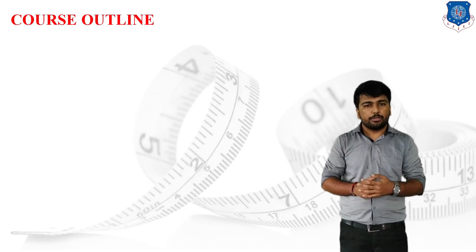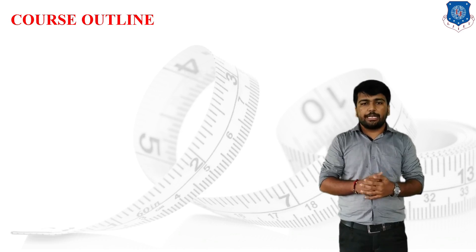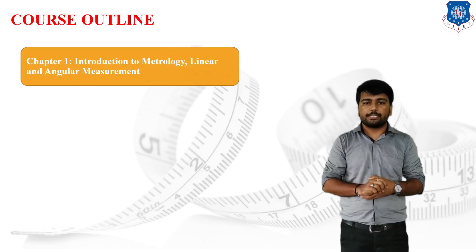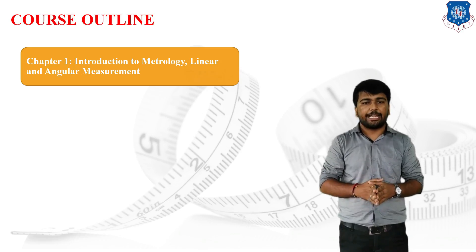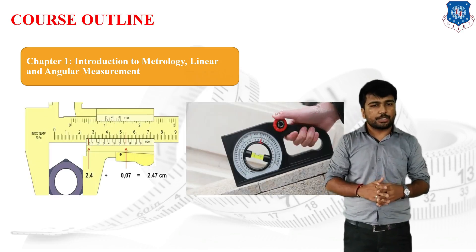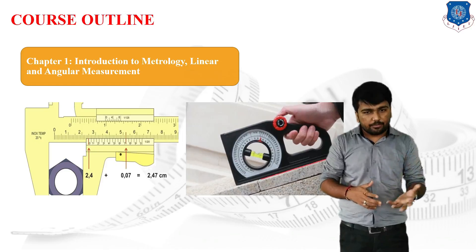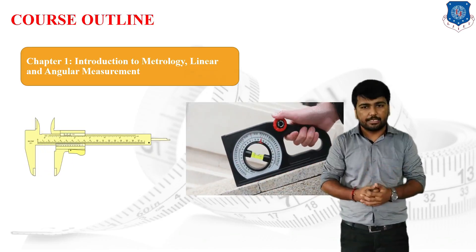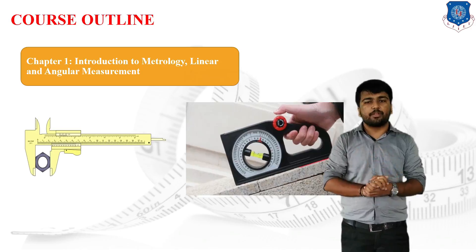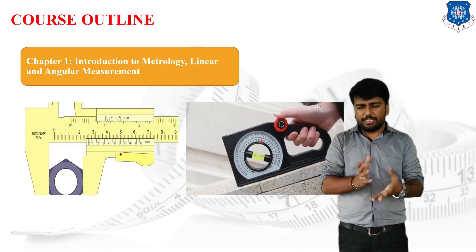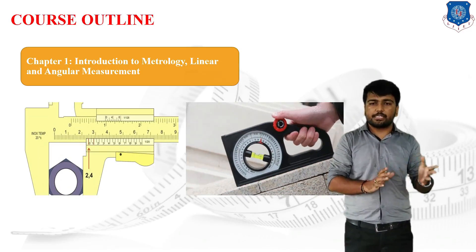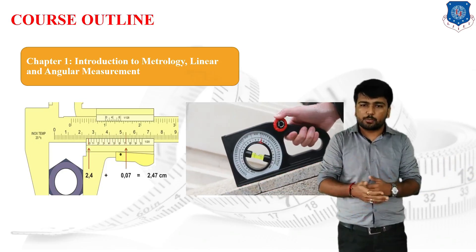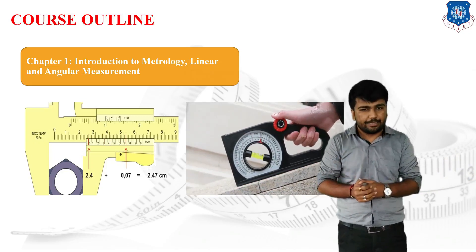Now we are going to discuss the course outline. This subject has a total of 5 units. Unit 1 is Introduction to Metrology and Linear and Angular Measurement, covering the concept of metrology, what is a standard, substandard, classification of standards, and the basic concept of linear and angular measurement — building on concepts from 11th standard physics with more advanced techniques.